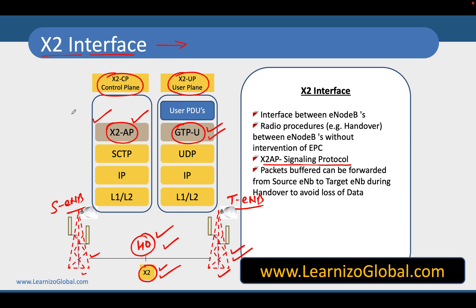In that case you need to complete the handover by using the S1 interface — we are going to talk about S1 interface in some upcoming videos. All the packets buffered during the handover procedure can be forwarded from the source eNodeB to the target eNodeB, to avoid any loss of data. Handover should be lossless, and for that the source eNodeB forwards all those packets to the target eNodeB. That is the main purpose of the X2 interface.